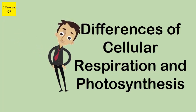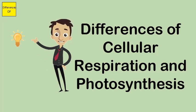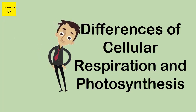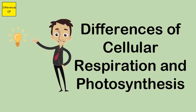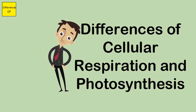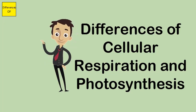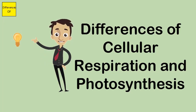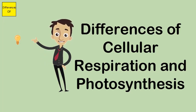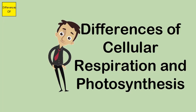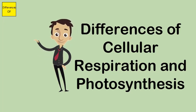Photosynthesis takes place in the presence of chlorophyll. Cellular respiration takes place in the cytoplasm and mitochondria in the cell of a living organism; photosynthesis takes place in the chloroplasts, an organelle of a plant. Similarities: both are reactions occurring in reverse that complement each other, and both produce ATP (adenosine triphosphate).